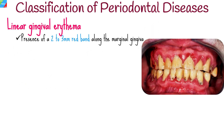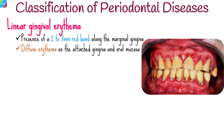HIV-associated periodontal disease can be classified into four types, the first of which is linear gingival erythema. It is characterized by the presence of a 2–3 mm red band along the marginal gingiva, associated with diffuse erythema on the attached gingiva and oral mucosa.